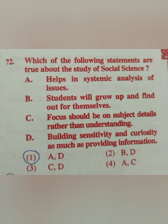Question 72: Which statements are true about the study of social science? Option A: helps in systematic analysis of issues. Option D: building sensitivity and curiosity as much as providing information. The correct answer is option 1 — A and D. Social science helps in systematic analysis and also builds sensitivity and curiosity along with providing information.